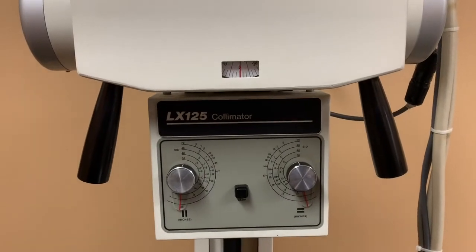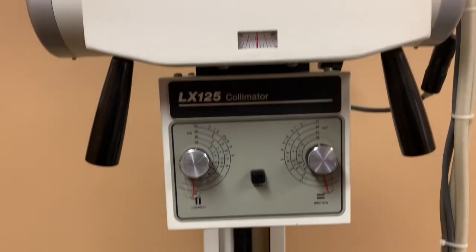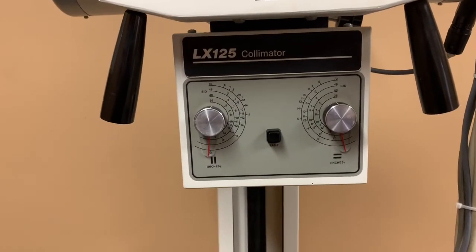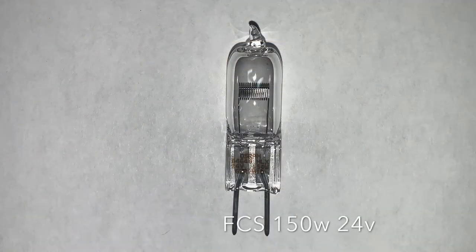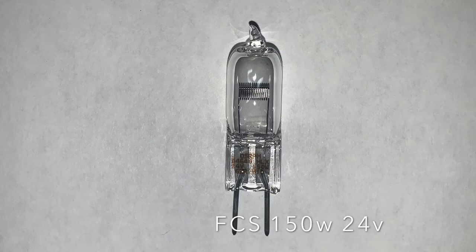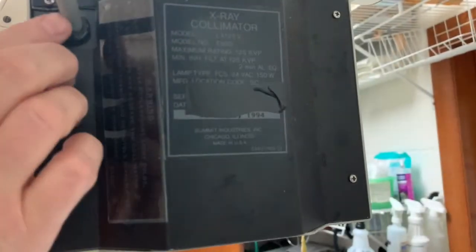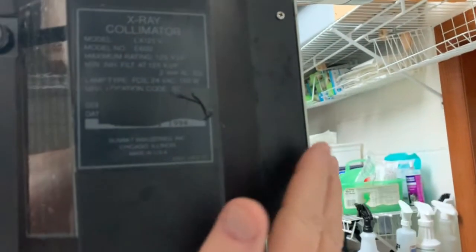This is an LX-125 collimator. It uses a 150 watt 24 volt FCS bulb. To access the bulb, you remove the cover by removing the screws on each corner.